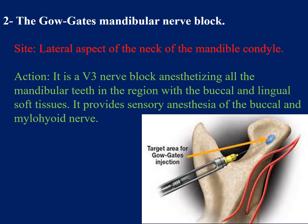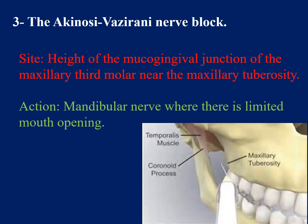The Gow-Gates block is a more generalized nerve block to the mandibular nerve. The Akinosi-Vazirani nerve block site is at the height of the mucogingival junction of the maxillary third molar near the maxillary tuberosity. Its action targets the mandibular nerve where there is limited mouth opening — for example, due to pus accumulation around the masseter muscles. This nerve block is very beneficial in such cases.